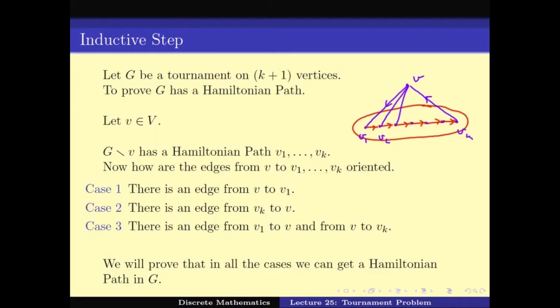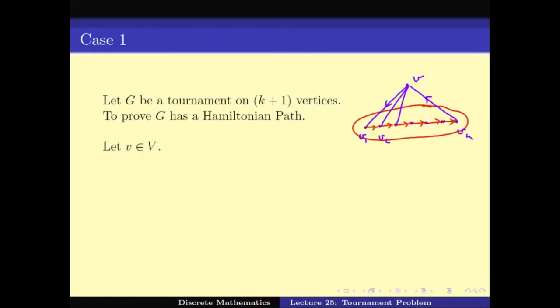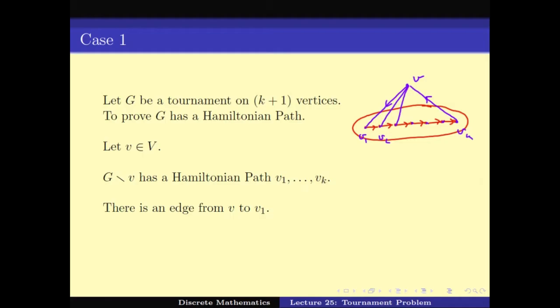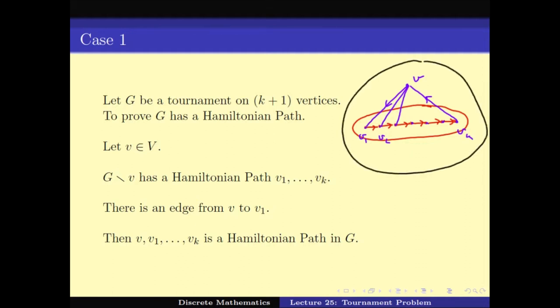In Case 1, there is an edge from V to V1. Then the Hamiltonian path is simply V, V1, V2, V3, ..., Vk — a path on K+1 vertices. There is an edge from V to V1, and the rest follows the original path. So in Case 1 there is a Hamiltonian path on the whole graph G.